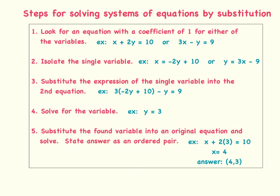After you've chosen your equation, you can move on to step two, which is to isolate the single variable. In order to isolate x, all I have to do is subtract both sides by 2y, and that will give me x equals negative 2y plus 10. In my example, I did solve for y, but it's two steps to solve for y, so I would encourage you to pick the equation that has the positive 1 value.